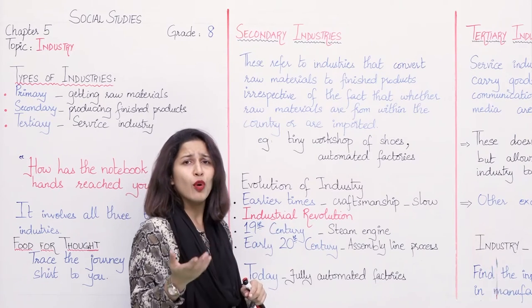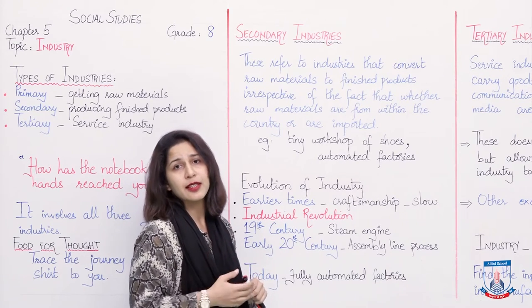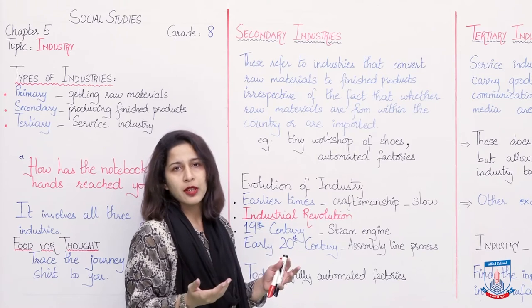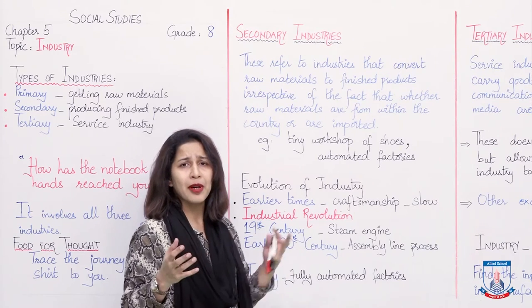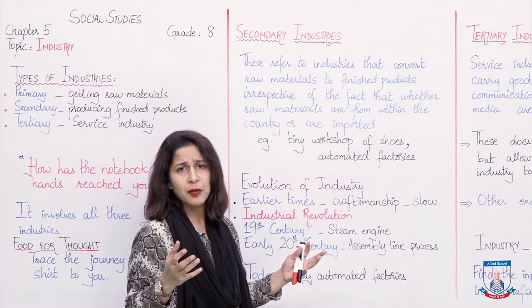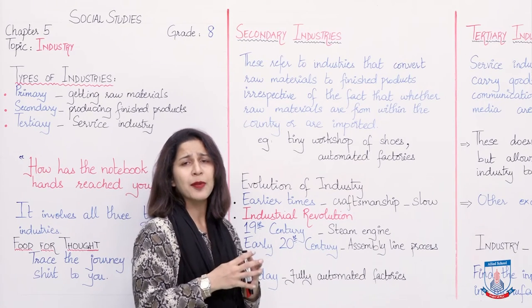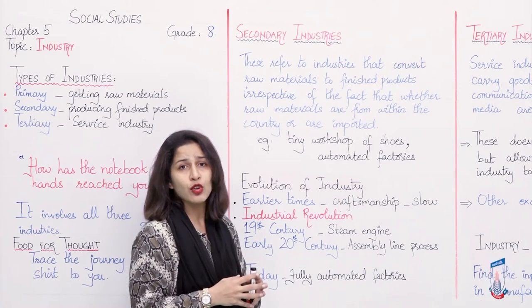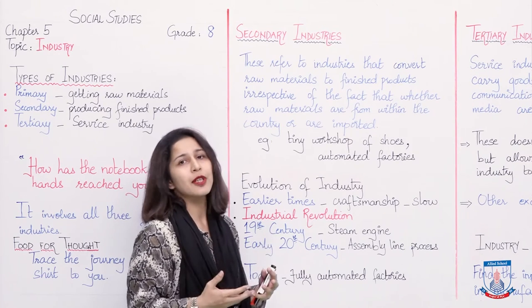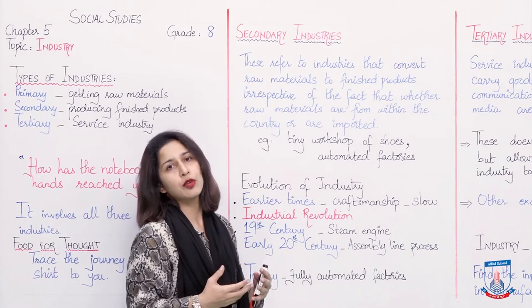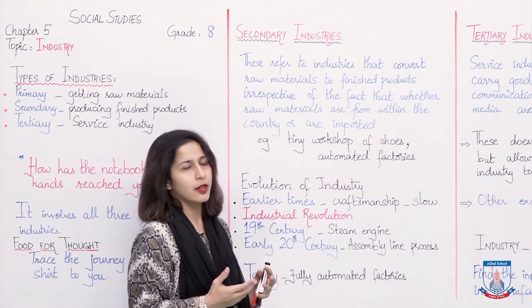Then, to the fully automated industries — like our car assembly line. These hi-fi cars are assembled and made with different parts produced at separate places, then combined together at one place to make a car. And that is not done by humans — woh labor ke through nahi kiya jata, that is done through automated machines. That too is a secondary industry.